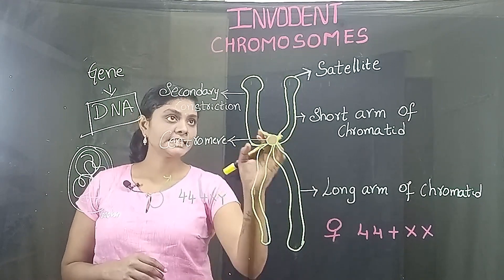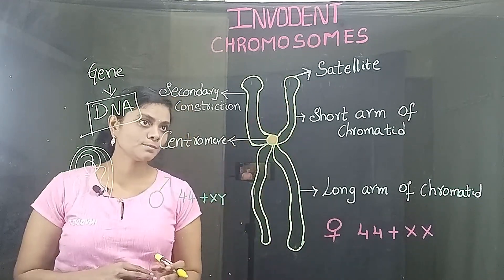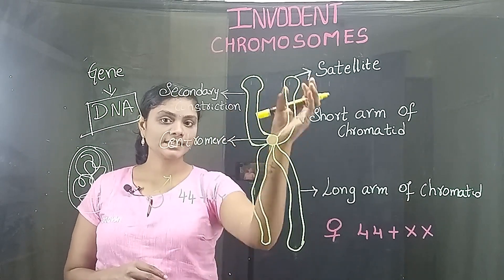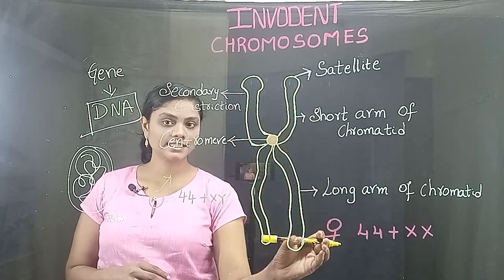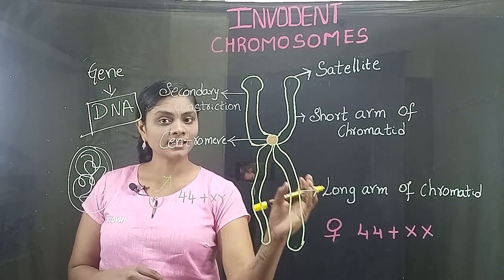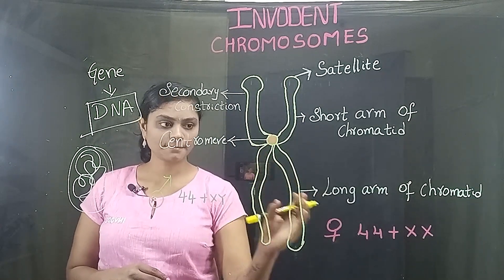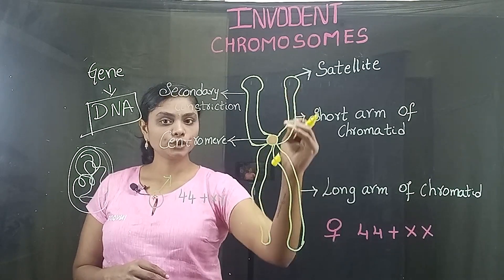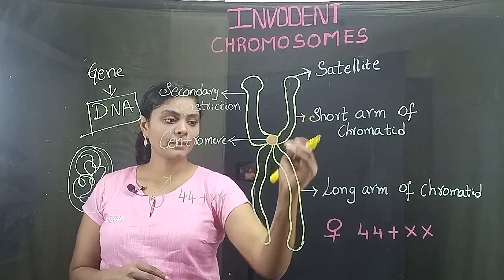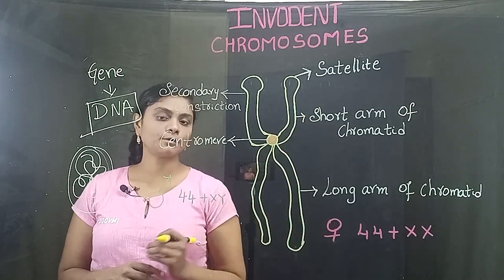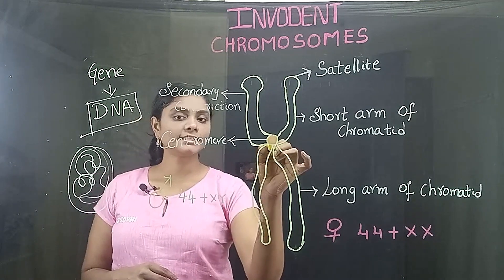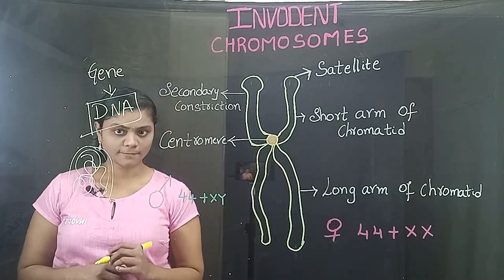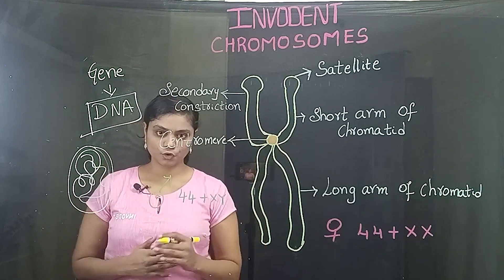Let us go into detail about the parts of the chromosome. The chromosome contains two chromatids, which are placed parallel to each other. It also contains an upper short arm and a long arm of the chromatin. These chromatids join at the region called the centromere. So this is the structure of the chromosome.